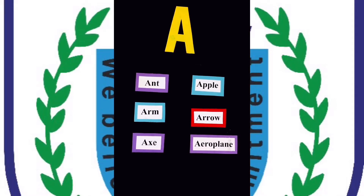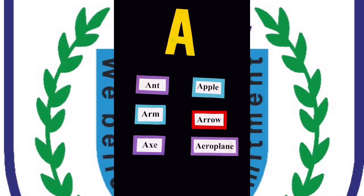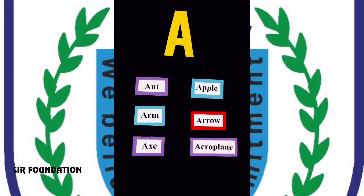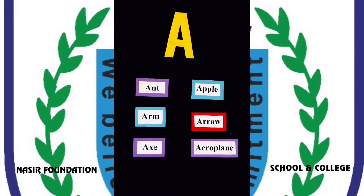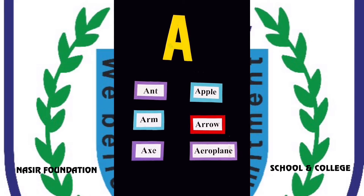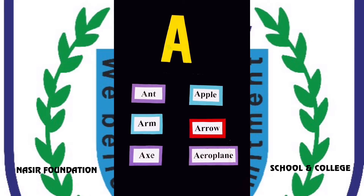Good morning class. In my previous lecture, I told you about the alphabets. They have different shapes, and when these alphabets are joined together, they make words. In today's lecture, we will write some words which start with A.